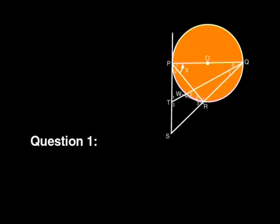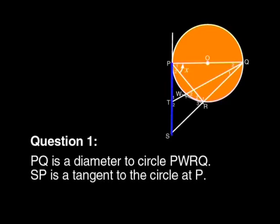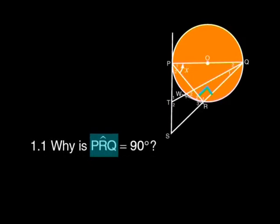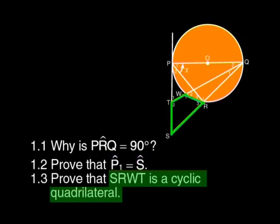In the figure, PQ is a diameter to circle PWRQ. SP is a tangent to the circle at P. Angle P1 is labeled as X. Question 1.1: Why is angle PRQ equal to 90 degrees? 1.2: Prove that P1 equals angle S. 1.3: Prove that SRWT is a cyclic quadrilateral.